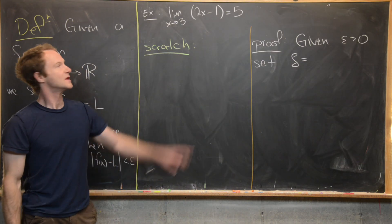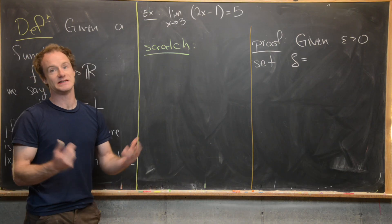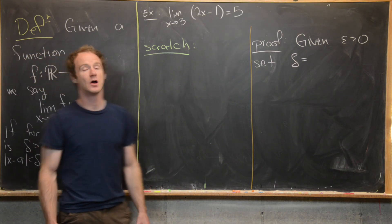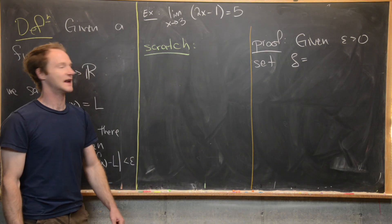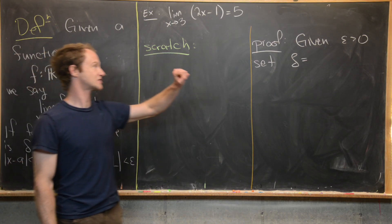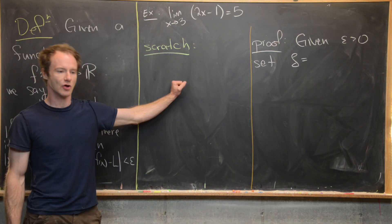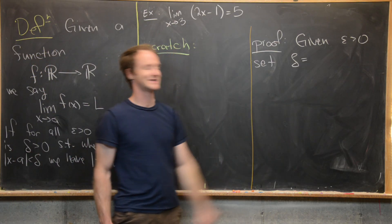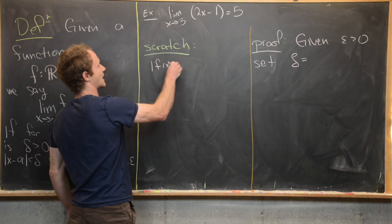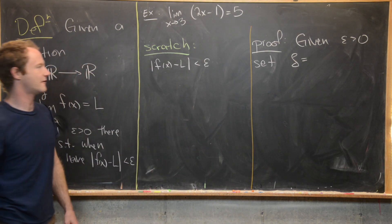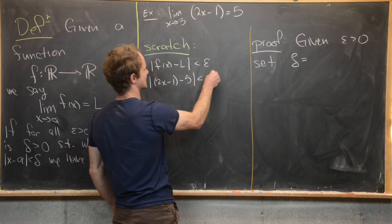For our first example, we'll show that the limit as x approaches 3 of (2x − 1) equals 5. This is a straightforward limit from Calculus 1, but we want to prove it using the careful epsilon-delta definition. We split this into scratch work and the actual proof. Starting with the scratch work: we begin with |f(x) − L| < epsilon, which gives us |2x − 1 − 5| < epsilon.